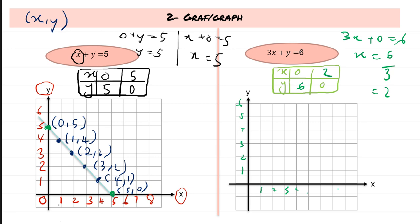Plot the points: when x = 0, y = 6, and when x = 2, y = 0. Draw a line through them. The possible pairs of solutions that fall on whole numbers are: (0, 6), (1, 3), and (2, 0). Those are the best three possible solutions for this equation.